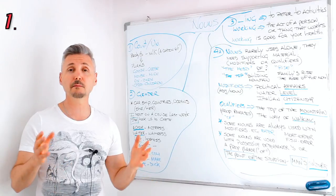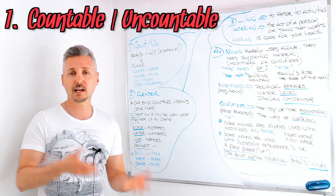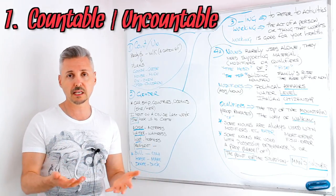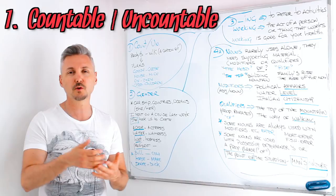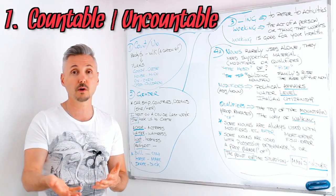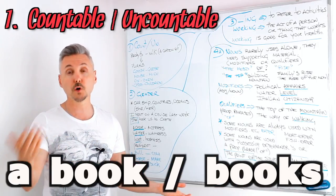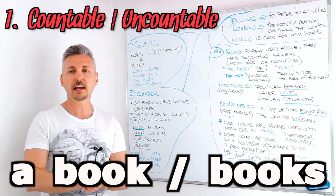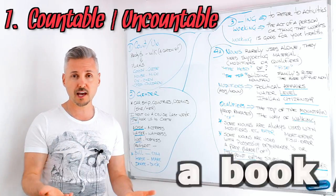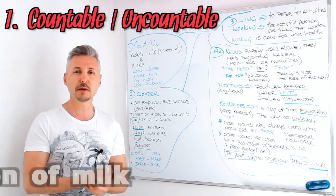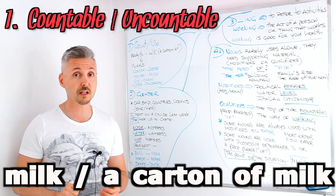Nouns can be countable and uncountable. Countable means that you can count them, so you can make them plural — like 'a book,' 'books.' Uncountable means you cannot count them, like 'milk.'